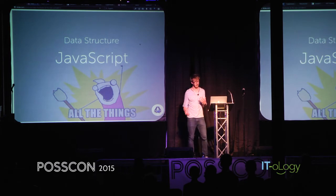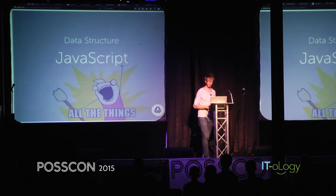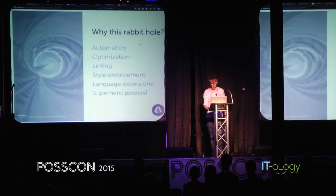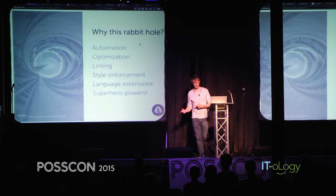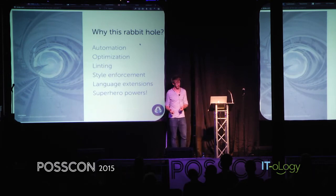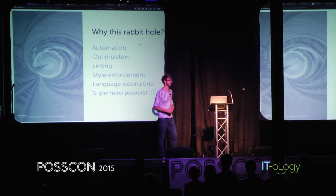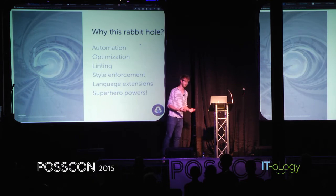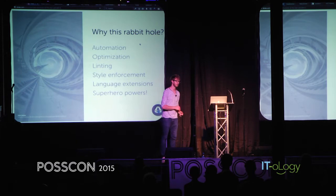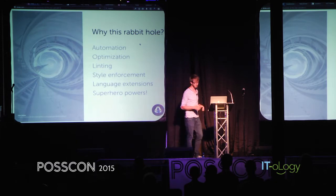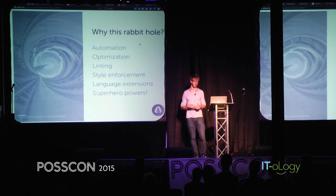But why would you go down this rabbit hole of programming your JavaScript and actually transforming it? Well, you can do a lot of really cool things. You can automate a lot of common practices. You can automatically generate optimizations. You can create your own custom linting rules. ESLint is actually extensible because it surfaces its internal representation. You can enforce specific code style, extend the language — basically anything a superhero could do, you could do.